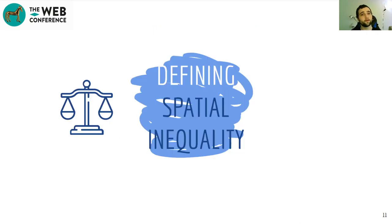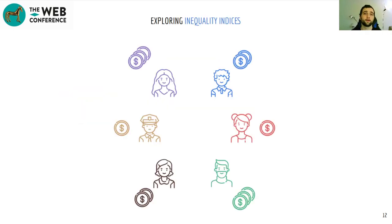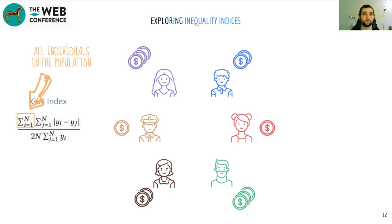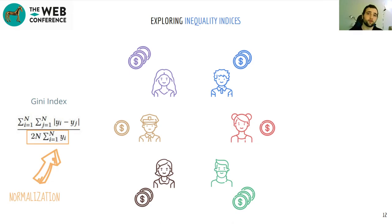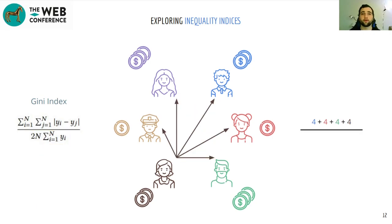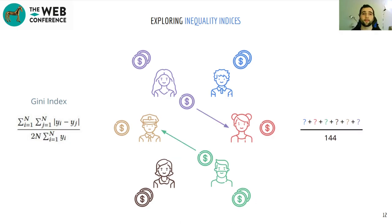Other inequality indices exist to measure equal treatment for individuals in a population. Take the Gini index applied to a population of six individuals each with a respective wage. It iterates over all individuals and calculates the absolute wage difference to every other individual, with a normalization factor accounting for the number of individuals and overall wages. There will be inequality greater than zero as long as some individuals have different wages, and if we equalize wages, inequality immediately becomes zero.